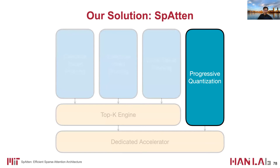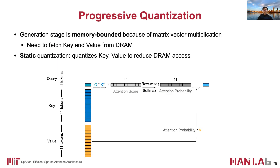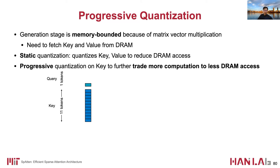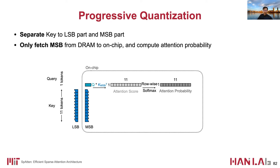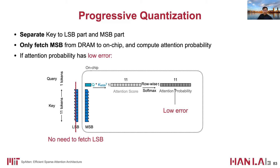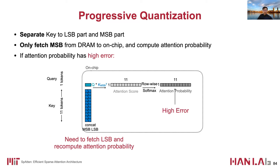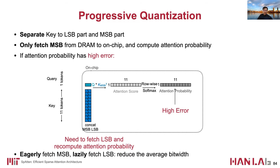We also propose progressive quantization. Recall that the generation stage is memory-bound, so our natural idea is to statically quantize the key and value matrices to reduce DRAM access. We further propose progressive quantization to trade more computation for less DRAM access. Specifically, we first separate each element in the key into LSB and MSB parts. We first only fetch MSBs of all key vectors to entry buffers and compute attention probabilities. Then we check the error of the probabilities — if it is low, MSBs are informative enough and there is no need to fetch LSBs. Otherwise, if the attention probability has high error, we fetch LSBs from DRAM, concatenate them with MSBs, and recompute. In short, we eagerly fetch MSBs and lazily fetch LSBs, thus reducing the average bit-width across all samples.